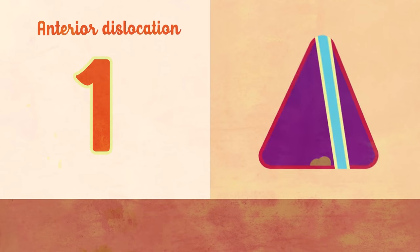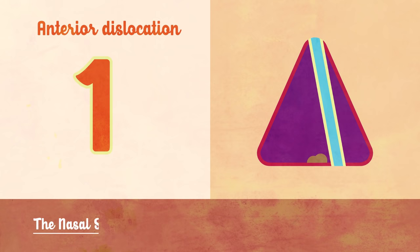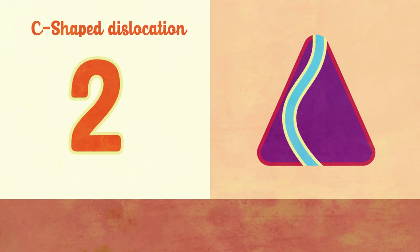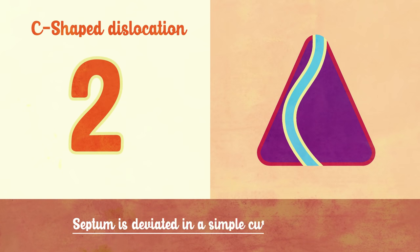Types of DNS. First, anterior dislocation: the nasal septum is dislocated into one of the nasal chambers. Second, C-shaped dislocation: the septum is deviated in a simple curve to one side, and compensatory hypertrophy of the turbinates occurs on the other side.